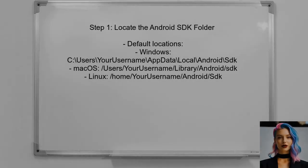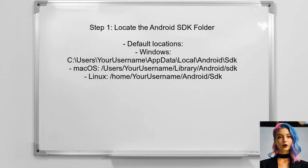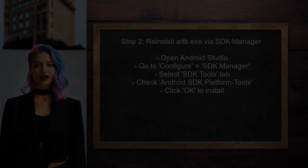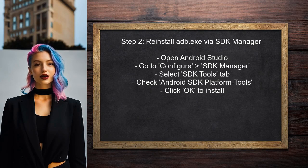To begin resolving the issue with ADB.exe being removed, first locate the Android SDK folder on your system. This is where the platform-tools, including ADB.exe, are typically stored. If you cannot find the ADB.exe file in the platform-tools folder, you may need to reinstall the SDK.